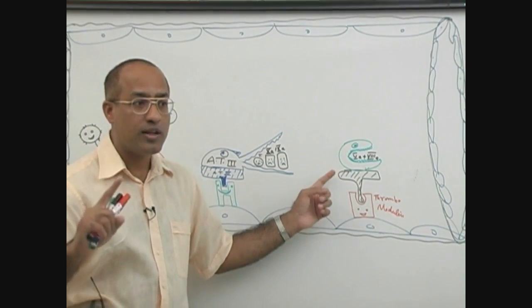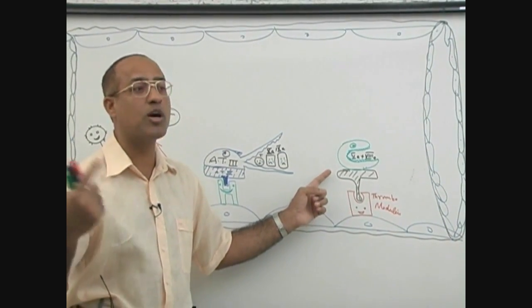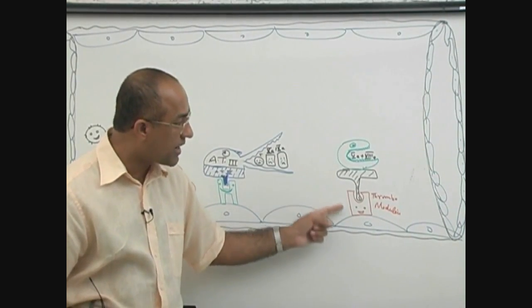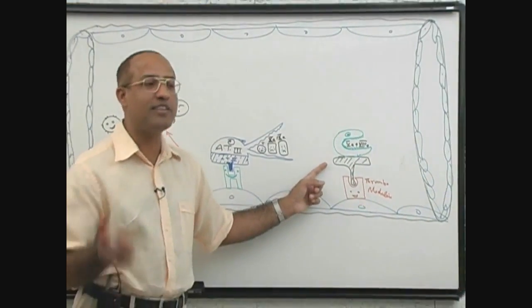Leading to coagulation. So thrombin alone is pro-coagulant, but once thrombin binds with it, it is so much modulated it becomes anti-coagulant.